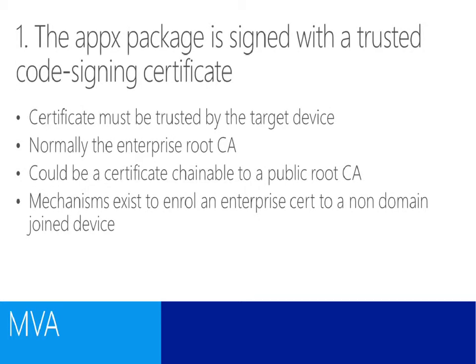The appx package has to be signed with a trusted code signing certificate that is trusted by the target device. Normally that will be something like your enterprise root CA, and if you're in a domain-joined environment, all devices joined to the domain will automatically trust your enterprise root CA. However, you might not be in a domain-joined environment. You may also not be able to provide the developer with access to a certificate from your enterprise root CA, so they may have to go and buy a certificate from a trusted root certification authority. If you have devices that aren't domain-joined — such as a Windows RT device — we have mechanisms within Windows Intune to deploy the correct certificate to the device to enable it to be trusted.